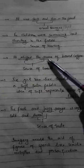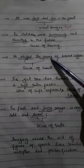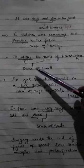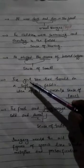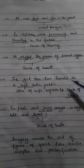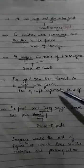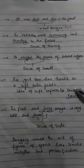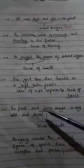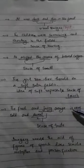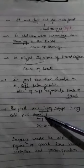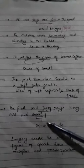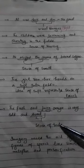'He whiffed the aroma of brewed coffee.' Here, two words — aroma and whiffed — represent sense of smell. 'The girl ran her hands on a soft, certain fabric.' Here, one word represents sense of touch. 'The fresh and juicy orange is very cold and sweet.' Here, two words — juicy and sweet — represent sense of taste.